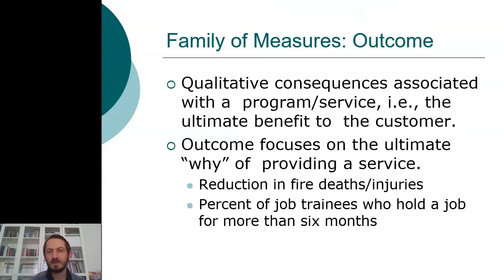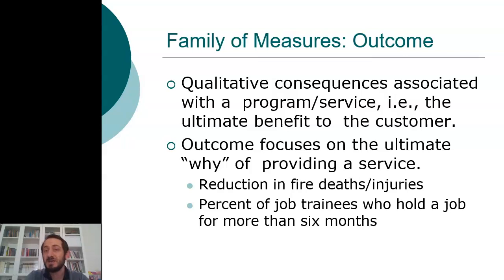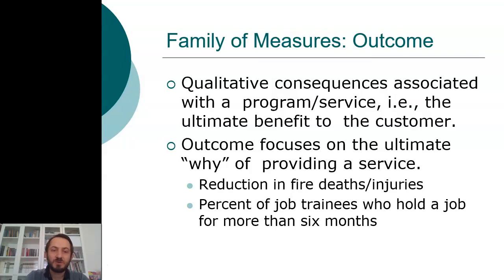The fourth point is also related to quality — it is outcome. It shows if you are effective or not; it shows if you have achieved your objectives or not. For example, you would like to prepare roads — for what purpose? To reduce death and injuries during a car trip. So, reduction in death and injuries during a car trip can be an outcome measure. Or reduction in fire injuries, or the percent of job trainees who hold a job for more than six months. As you can see, this is qualitative, not quantitative — it shows the qualitative consequences associated with a program or service.